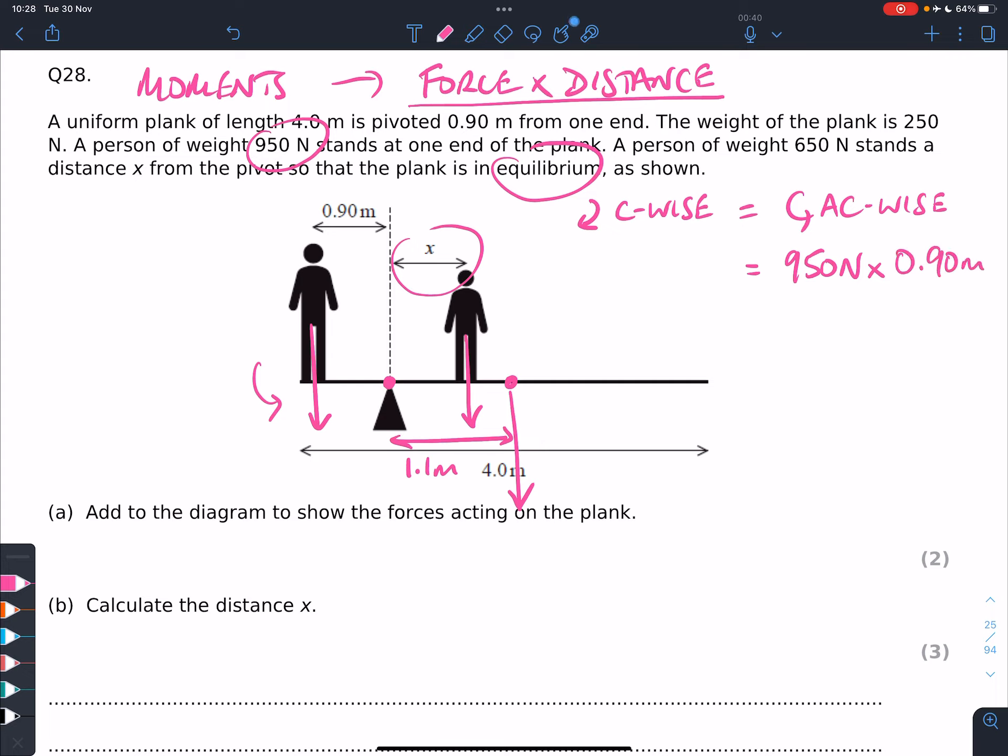Now that's going to be the anti-clockwise moment, and the clockwise moment is going to be this force that we don't know. We know the force, actually, is 650 newtons, but we don't know the distance, so we'll write 650 newtons, times x metres.